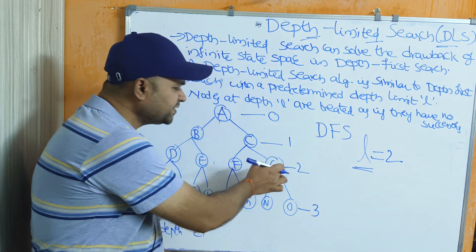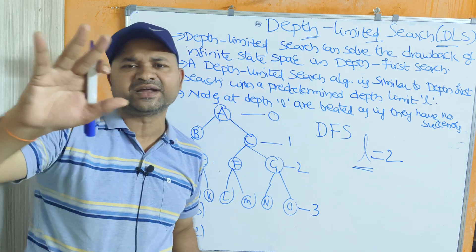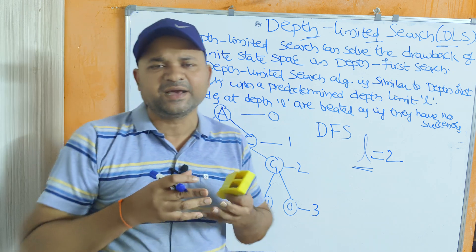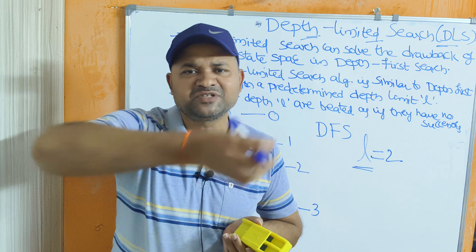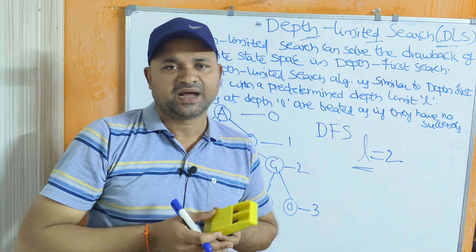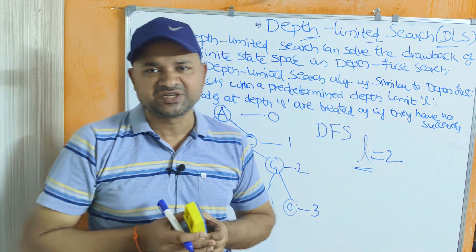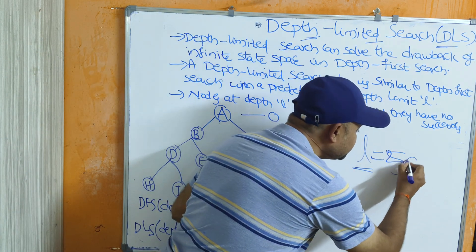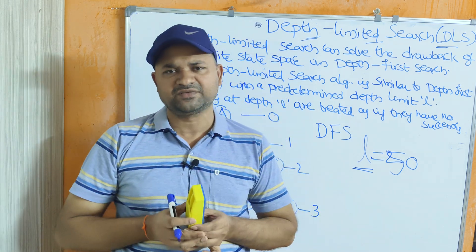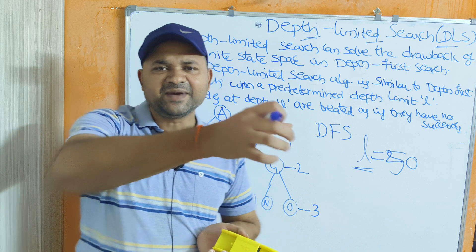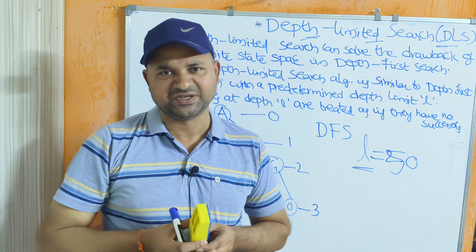Once we reach the depth limit of 2, even if nodes have successors, we do not explore them. For example, if the depth of the tree is 100 and we use DFS, we must search up to level 100. But with DLS, if we set the limit to 50, we search only up to depth 50; the remaining 50 levels will not be searched.